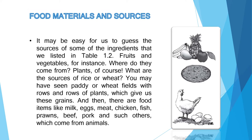अब food materials के sources देखते हैं — यानी यह food हमें कहाँ से मिलता है। हमारे table में जो ingredients हैं उनमें से कुछ का source हम guess कर सकते हैं। Fruits और vegetables plants से मिलते हैं। Rice और wheat की fields होती हैं, plants की rows होती हैं, और वहाँ से wheat और paddy जो grains हैं, हमें मिलते हैं।